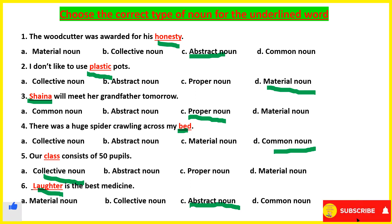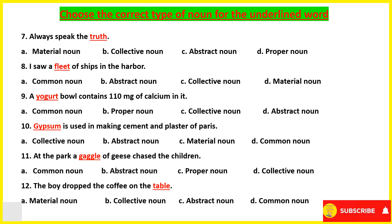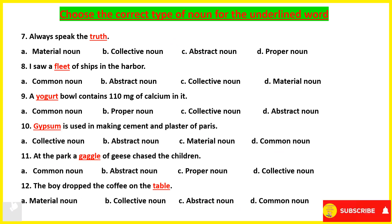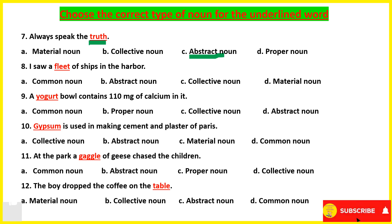Coming to the next set: 'Always speak the truth.' Truth is a quality, so it will be abstract noun. Next: 'I saw a fleet of ships in the harbor.' Fleet means a group of ships, so at that time it will be collective noun.